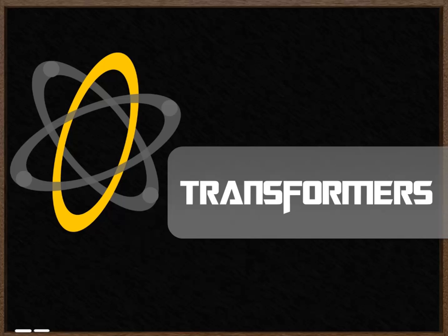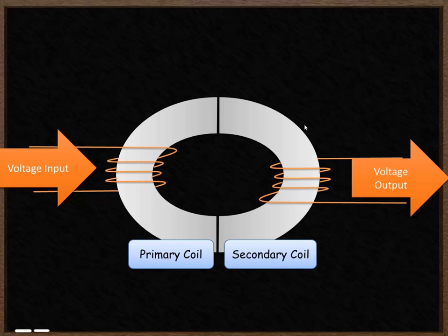In this video we're going to be looking at how transformers work. A transformer is made up of two coils: the primary coil and the secondary coil. Voltage is inputted into the primary coil. The transformer then changes the voltage and a different voltage will leave from the secondary coil. That might mean the voltage is increased or decreased depending on what is needed by the appliance.